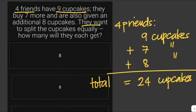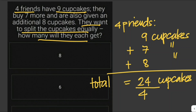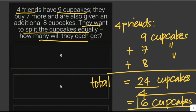They want to equally split the cupcakes among themselves. All we have to do is divide 24 by 4. The answer is six cupcakes — each one of them gets six cupcakes. So this is our answer.